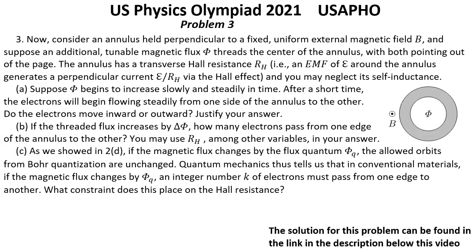Question C: As we showed in 2D, if the magnetic flux changes by the flux quantum Φ_Q, the allowed orbits from Bohr quantization are unchanged. Quantum mechanics thus tells us that in conventional materials, if the magnetic flux changes by Φ_Q, an integer number K of electrons must pass from one edge to another. What constraint does this place on the Hall resistance?